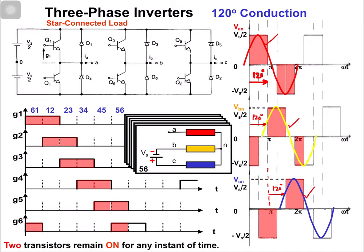In the quasi-square phase voltages, triplen harmonics will be absent because of the 60 degree dead band, which ensures no triplen harmonic is present. Writing the Fourier series for the phase voltages: (4Vs / nπ) × sin(nπ/3) × sin(nωt + nπ/6).